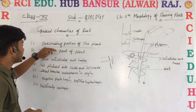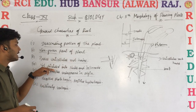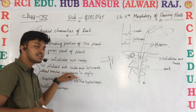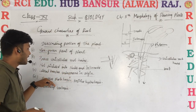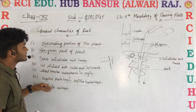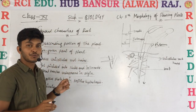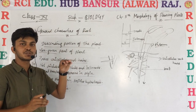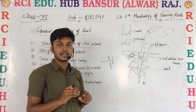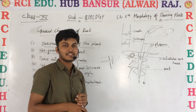To summarize: the root is the descending portion of the plant, with unicellular root hairs. Roots are not divided into nodes and internodes, their branches are endogenous in origin, they are negative phototropic, positive hydrotropic, and positive geotropic. In the next lecture we will talk about the structure of roots. If you are liking this lecture, please like and subscribe. Thanks.